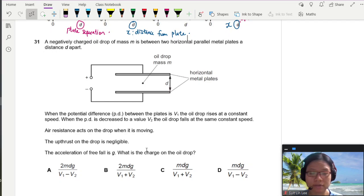Okay, question 31. Steel electric fields. Here you have a negatively charged oil drop of mass M between two horizontal metal plates, a distance D apart.